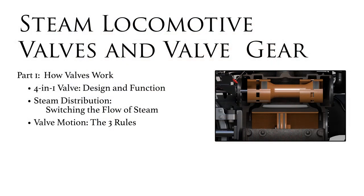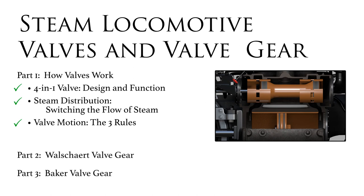We have seen how the valve performs four functions through the use of four rings divided between the two ends of the valve. We have seen how the valve switches the flow of steam to the ports by traveling from one side of the port to the other side. And we have seen how this motion of the valve can be described by three general rules. These rules form the basic requirements that guide the design of a valve gear mechanism to operate the valve. The next step is to build up a mechanism step by step, applying these rules to obtain the proper motion at the valve stem. We'll start with Walschaerts valve gear because it is simpler and easier to understand, and it was historically the first of these side-mounted valve gears to be developed. Then we'll look at Baker valve gear and see how it uses a different arrangement of levers to accomplish the same goal. I hope you'll join me for these additional videos coming soon.